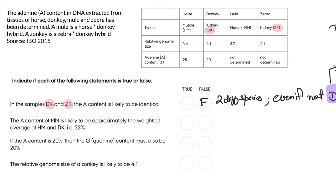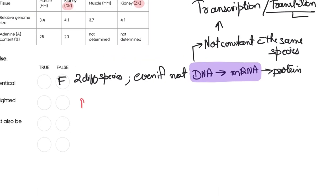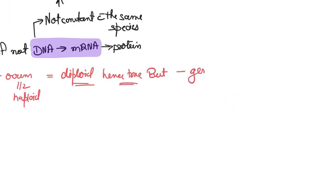Let's come to the second one. The A content of MM (mules) is likely to be approximately the weighted average—that is, about 23%. Now mules, how are they created? Half DNA is from sperm, half from ovum. Sperm and ovum are haploid, that means you have a diploid zygote, but remember genome size is different in these two creatures.